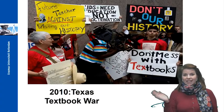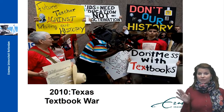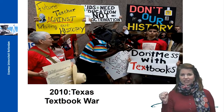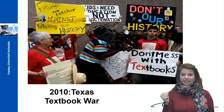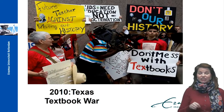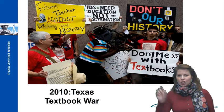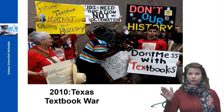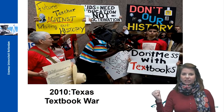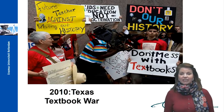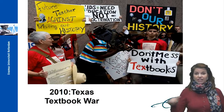Welcome to lecture four of our course Rethinking History. In this lecture we will discuss history and identity. Let's start with a picture in which we see people protesting against changes in history textbooks as proposed by the Texas State Board of Education. Their signs read: 'Don't mess with textbooks' and 'Don't poison our history' and 'Kids need education not indoctrination.'